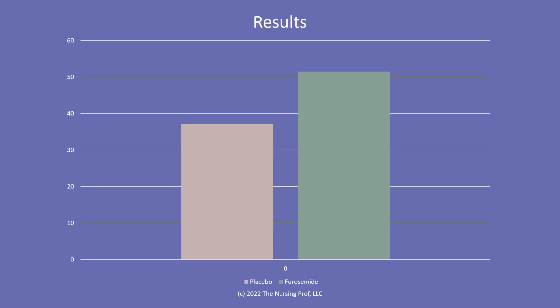So what did they find? If you take a look at the diagram here, you can see that with placebo, they had about a 37% chance of avoiding some of those bad outcomes just by doing the usual care. However, when they gave those patients who were already a little hemodynamically unstable and had a fairly large pulmonary embolus furosemide, there was a 51% chance that they would avoid having decompensation and declining. So obviously, there was an improvement in the results as a result of using that furosemide.